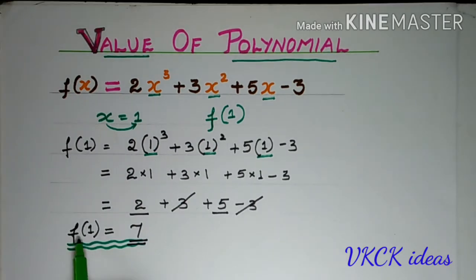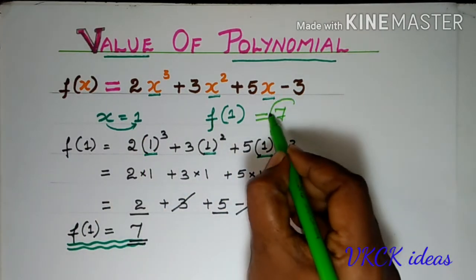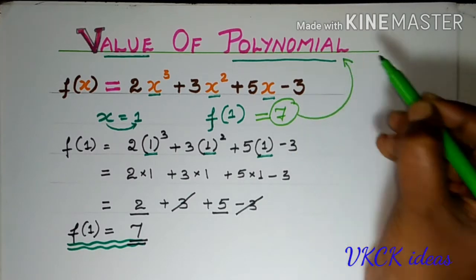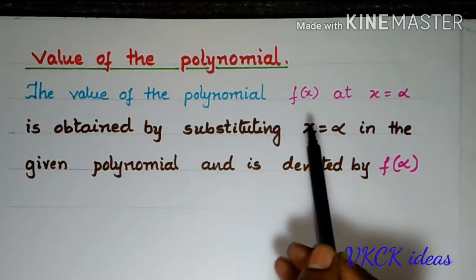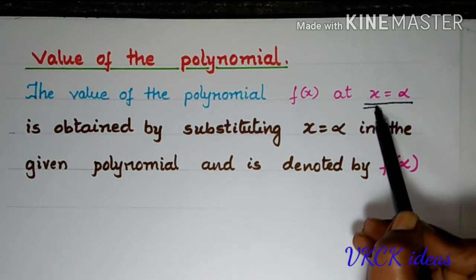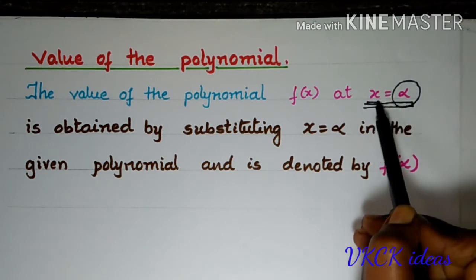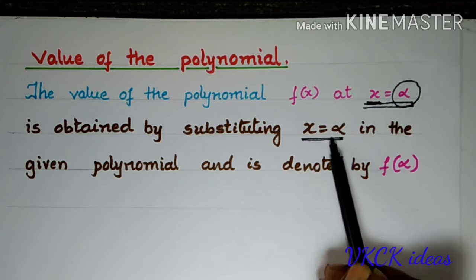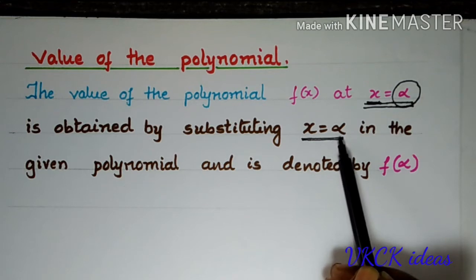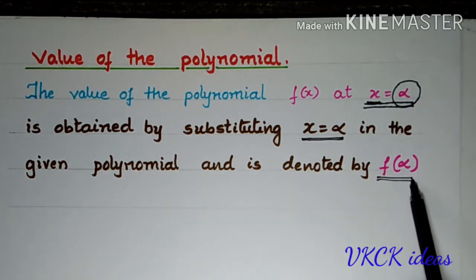Children, just observe. When we took x = 1, f(1) became 7, which is considered as the value of the polynomial. The value of the polynomial f(x) at x = α — alpha is simply a value, whatever you are going to substitute for the unknown x — is obtained by substituting x = α in the given polynomial and is denoted by f(α). Alpha may be 1, 2, 0, or whatever value.